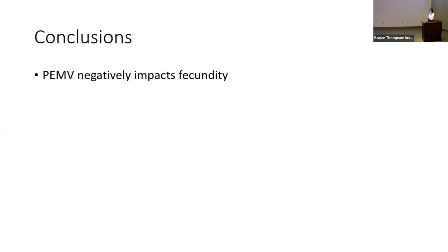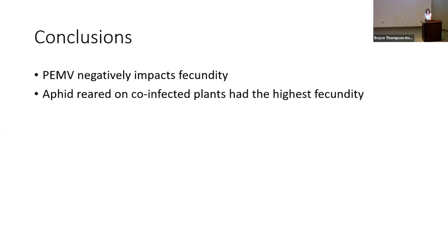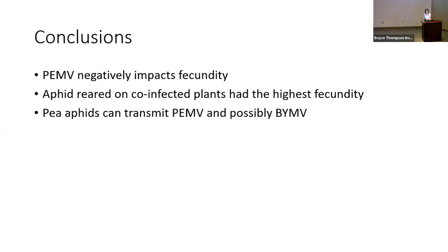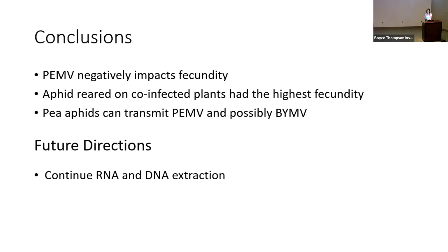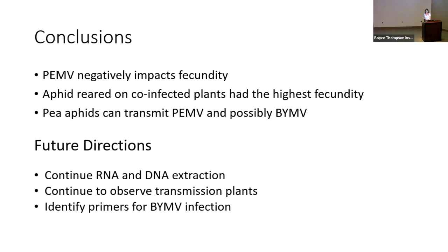In conclusion, PMV negatively impacts aphid fecundity, and aphids reared on co-infected plants had the highest fecundity. Pea aphids can transmit PMV and possibly Bean Yellow Mosaic Virus. Future directions include getting the BYMV primers working to confirm infection, continuing RNA and DNA extractions and analysis, observing plant transmission over the remaining monitoring period, and identifying reliable primers for infection confirmation.